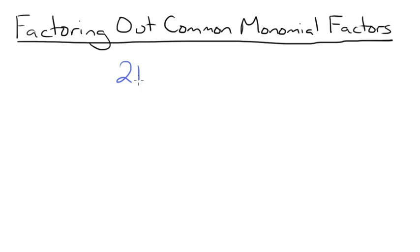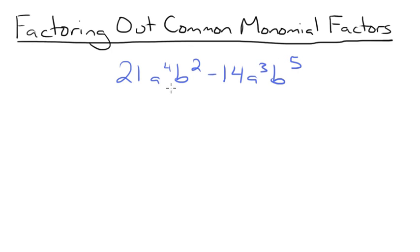Factor the polynomial 21a to the 4th b squared minus 14a cubed b to the 5th. Start by factoring the greatest common factor between these two terms. Do this by finding the GCF of the constants 21 and 14, the a terms — a to the 4th and a cubed — and the b terms — b squared and b to the 5th. We're going to find the GCF of these three sets of terms separately, and then we'll multiply them together.